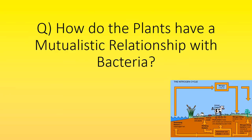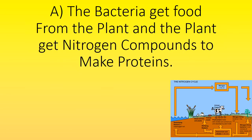How do plants have a mutualistic relationship with bacteria? The bacteria gets food from the plant, and the plant gets nitrogen compounds to make proteins.